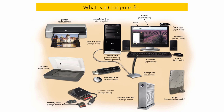This is a typical example of a computer and the devices connected to it and used together. This is a typical desktop computer, this is a monitor, this is a keyboard, these are speakers, this is a mouse, this is a microphone, this is a flash drive, this is a modem, this is external storage, this is a card reader, this is a scanner, and this is a printer. These are typical examples of a computer and its components.